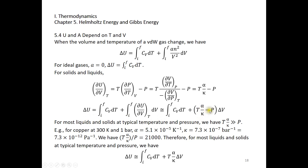For most solids and liquids, T·α/κ is much larger than P, so we can neglect the pressure term. For example, copper at 300 K and 1 bar gives T·α/κ = 21,000 bar, which is 21,000 times larger than P = 1 bar. When adding or subtracting two numbers we can neglect the much smaller one, so δU/δV simplifies to T·α/κ for most liquids and solids.